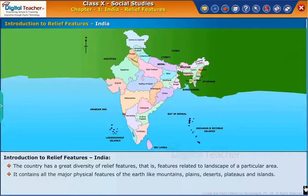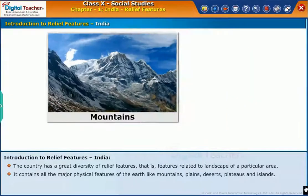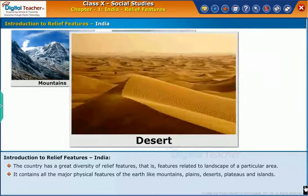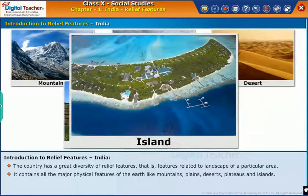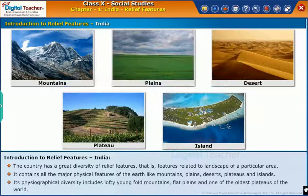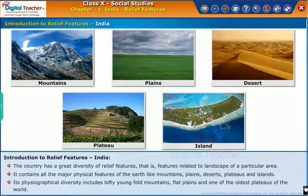It contains all the major physical features of the earth, like mountains, plains, deserts, plateaus and islands. Its physiographical diversity includes lofty angfold mountains, flat plains and one of the oldest plateaus of the world.